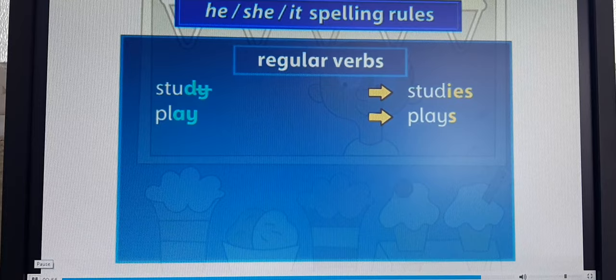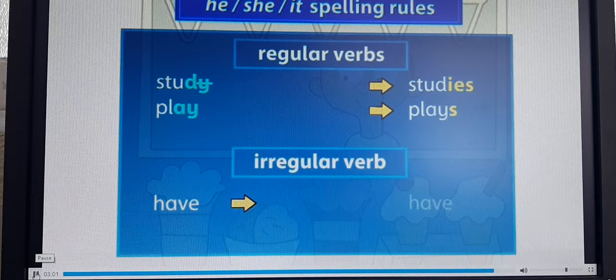There are no spelling rules for irregular verbs like have. The spelling needs to be remembered.